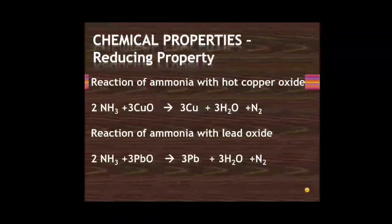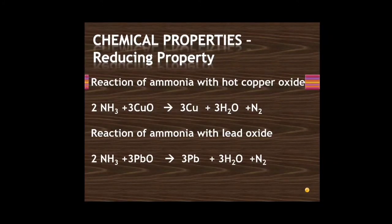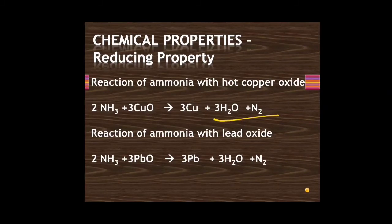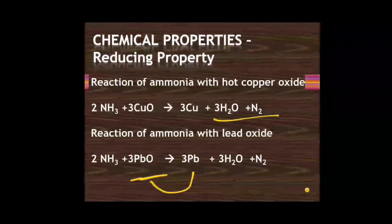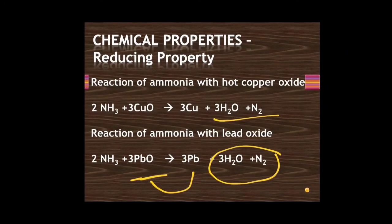Ammonia is also used as a reducing agent. When treated with hot copper oxide, it reduces copper oxide to copper, producing water and nitrogen gas. Similarly, with lead oxide, ammonia reduces lead oxide to lead, also producing water and nitrogen gas.